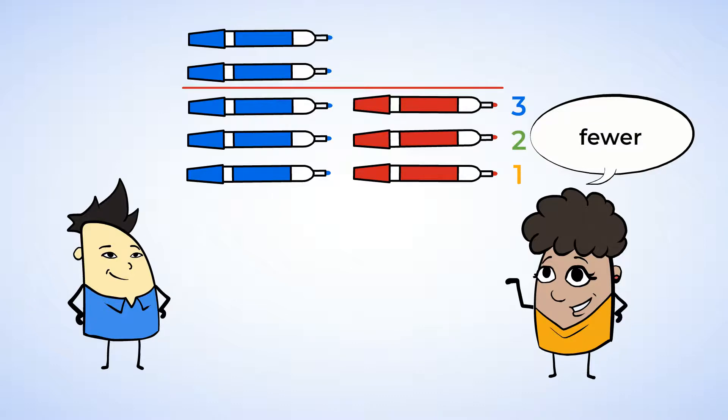And how many markers does Chen have? One, two, three, four, five. He has five markers. Latifah's three markers is fewer markers than Chen's five markers. Three is less than five.